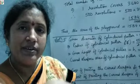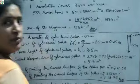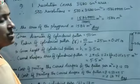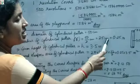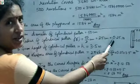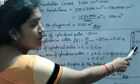The cylindrical pillar has height 3.5 m and diameter 50 cm, so radius = 25 cm. Since height is in meters and radius is in cm, we convert: 25 cm ÷ 100 = 0.25 m. So radius R = 0.25 m and height H = 3.5 m.